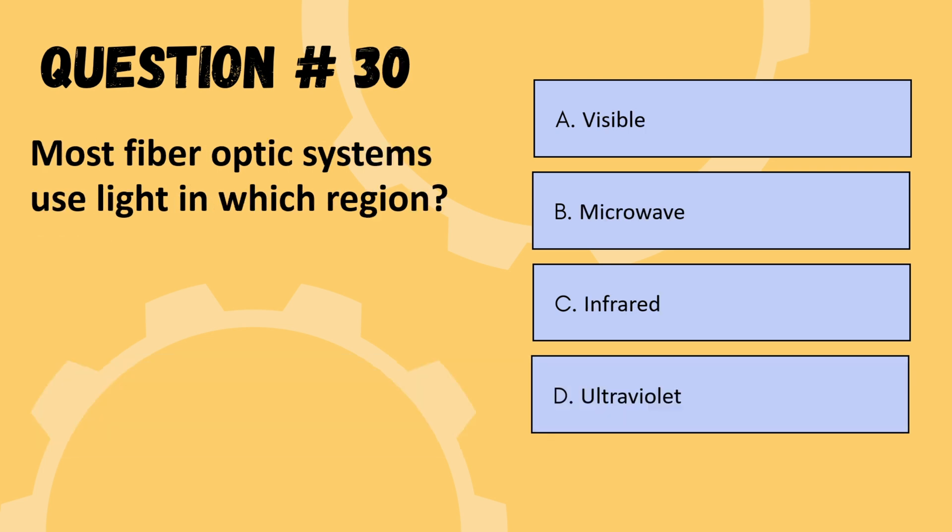Last question: most fiber optic systems use light in which region? Options are visible, microwave, infrared, or ultraviolet. The correct option is C: infrared.